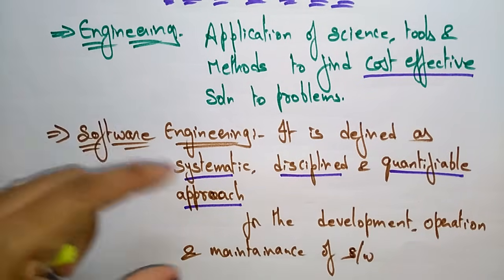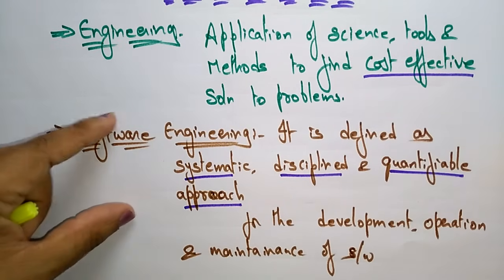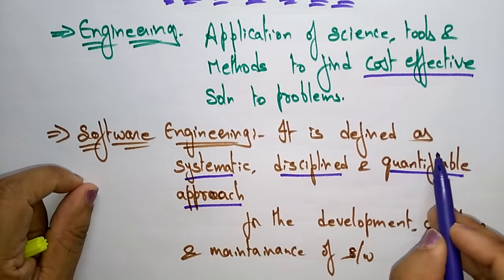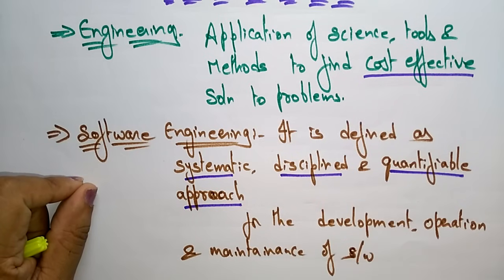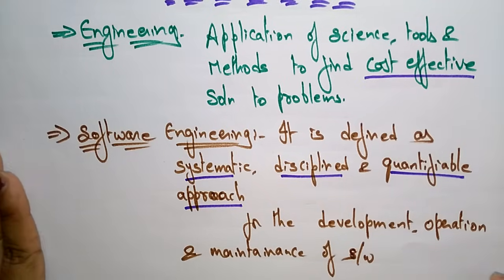So if you follow these rules then your output will be effective — that is what you call software engineering. Software engineering is defined as a systematic, disciplined, and quantifiable approach for the development, operation, and maintenance of software. Whatever software you are going to develop, if you follow the systematic approach, that method you call software engineering. I hope you understand the definition of software engineering.